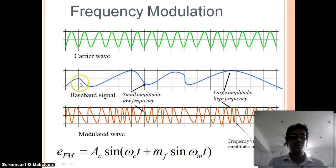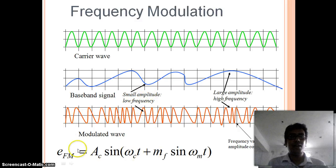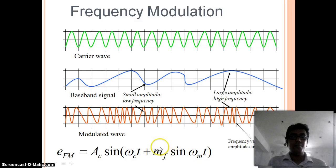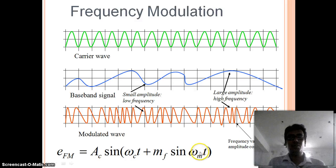In frequency modulation, we can see that where the amplitude of the baseband signal is higher, the frequency is also higher, and where the amplitude is low, the frequency is also low. The general equation of frequency modulation is: Ac sin(ωc·t + Mf·sin(ωm·t)). Here Mf is the modulation index of frequency modulation, ωc is the angular frequency of the carrier signal, and ωm is the angular frequency of the modulating signal.